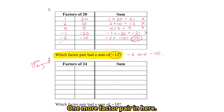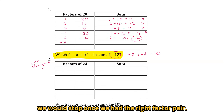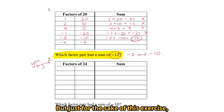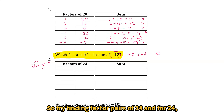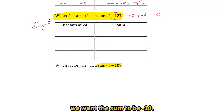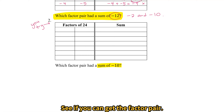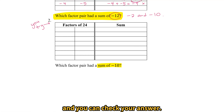One more factor pair in here — if we were doing a real factoring problem with trinomials, we would stop once we had the right factor pair. But just for the sake of this exercise, we can try the last one: negative 4 plus negative 5 is negative 9. It doesn't work, and that's okay. That's the game we're going to play. So try finding factor pairs of 24, and for 24 we want the sum to be negative 10. Try that on your own and see if you can get the factor pair.